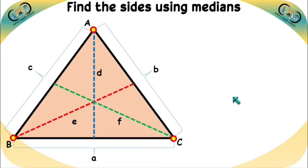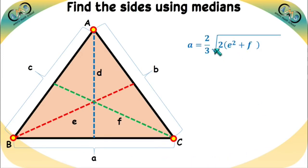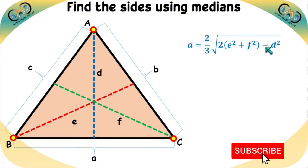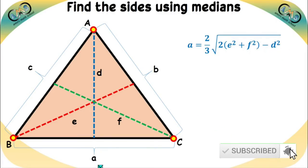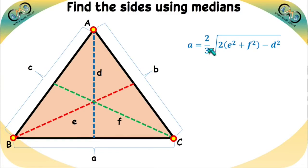So what will be the formula? In this video we will discuss the formula, some examples, and how the formula is derived. Using medians D, E, and F, if we want to find side a, the value of a will be 2/3 times the square root of 2E² + 2F² − D².